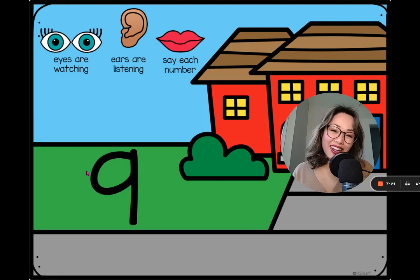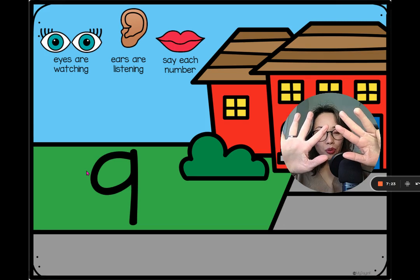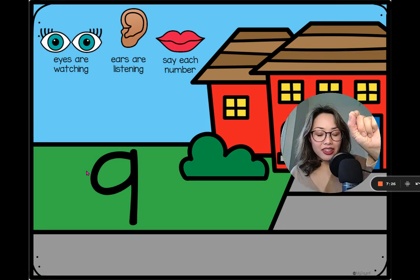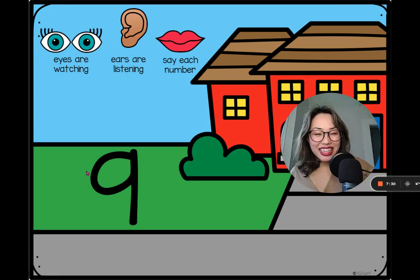So say it nine, show me. Write it in the air. Nine looks like this. Lollipop on a stick. That's the number nine.